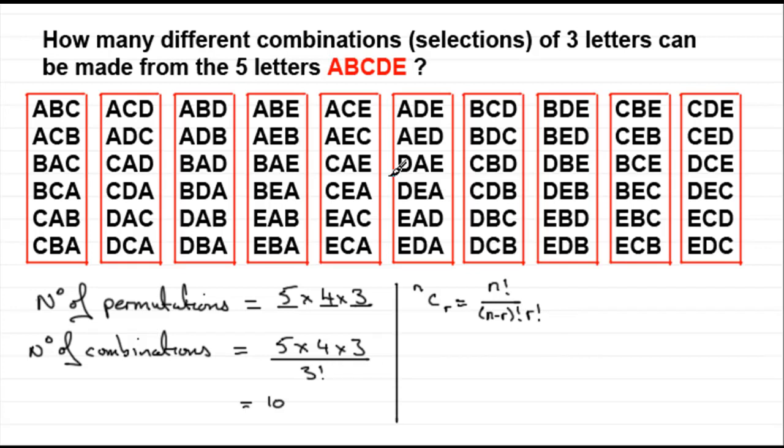And so for a question like this, we are choosing from five items, we choose r items. And r is going to be 3, 5c3 as we often call it. So that's going to be 5 factorial divided by n minus r, so that would be 5 take away 3, that would be 2, 2 factorial.